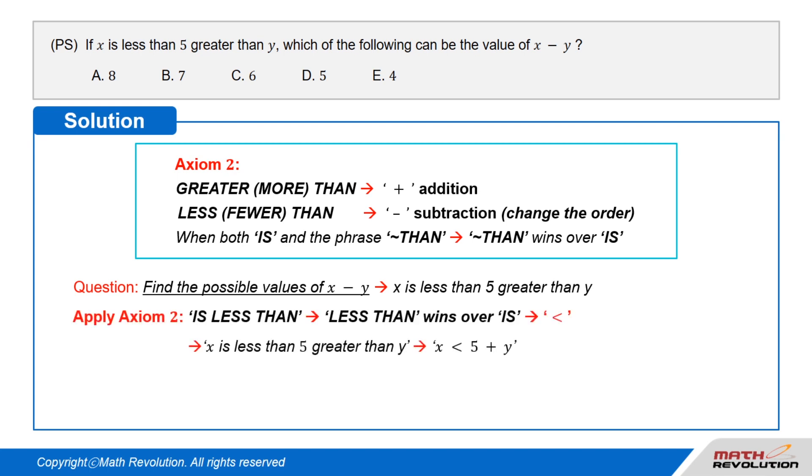First, using Axiom 2, we will rewrite the 'is less than' as 'less than' because 'less than' wins over 'is' and will be represented by the symbol less than.